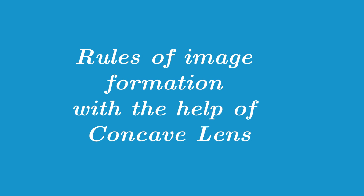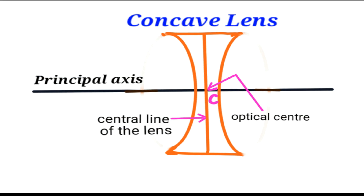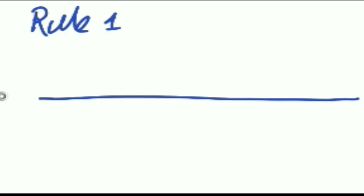Hello friend, in this video we will show you the rules of image formation with the help of a concave lens. I already explained the rules of image formation by a convex lens previously. In the same way, here for the concave lens I am showing a few rules. Rule number one is that a ray of light which is parallel to the principal axis of a concave lens appears to be coming from its focus after refraction through the lens.